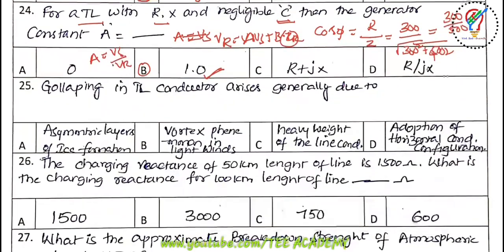Twenty-fifth question: galloping in a transmission line conductor arises generally due to — the options are asymmetrical layers of ice formation, vortex phenomena in light winds, heavy weight of conductors, and adoption of horizontal configuration. The answer is adoption of horizontal conductor configuration.